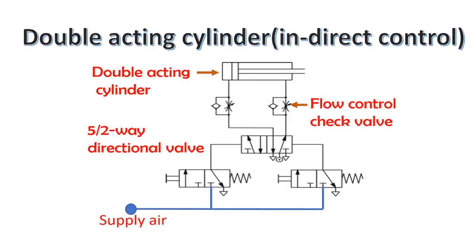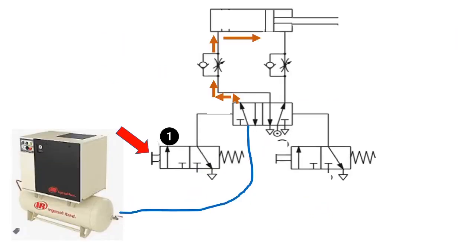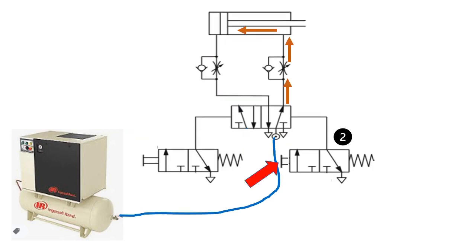This is a double acting cylinder with control. A double acting cylinder is to advance when push button number one is pressed and will remain extended until push button number two is pressed. When push button number two is pressed, the cylinder is to retract.